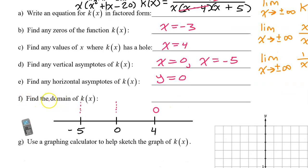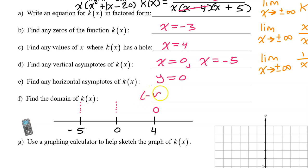Part F: we can find the domain of k of x just by looking at the vertical asymptotes and holes. The domain will be all real numbers except for any vertical asymptotes and holes. It helps to think of this as a number line and put your vertical asymptotes and holes in order from least to greatest. So the domain goes from negative infinity to negative 5, union negative 5 to 0, union 0 to 4, union 4 to infinity.